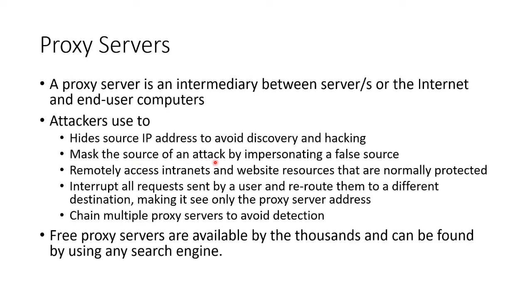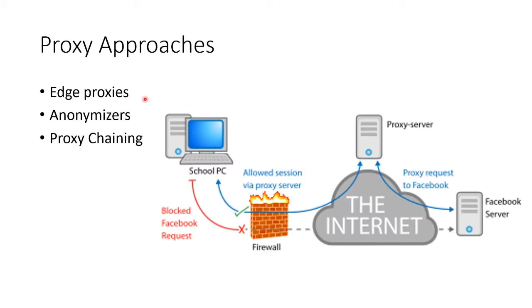We use proxies to hide the source address, to avoid discovery, and to mask the actual source of an attack. It provides a false source. We can remotely access intranets and website resources that are remotely protected, and interrupt all requests sent by a user and reroute them to a different destination, making it show only the proxy server address. We can chain or daisy-chain multiple proxies to make it even harder.